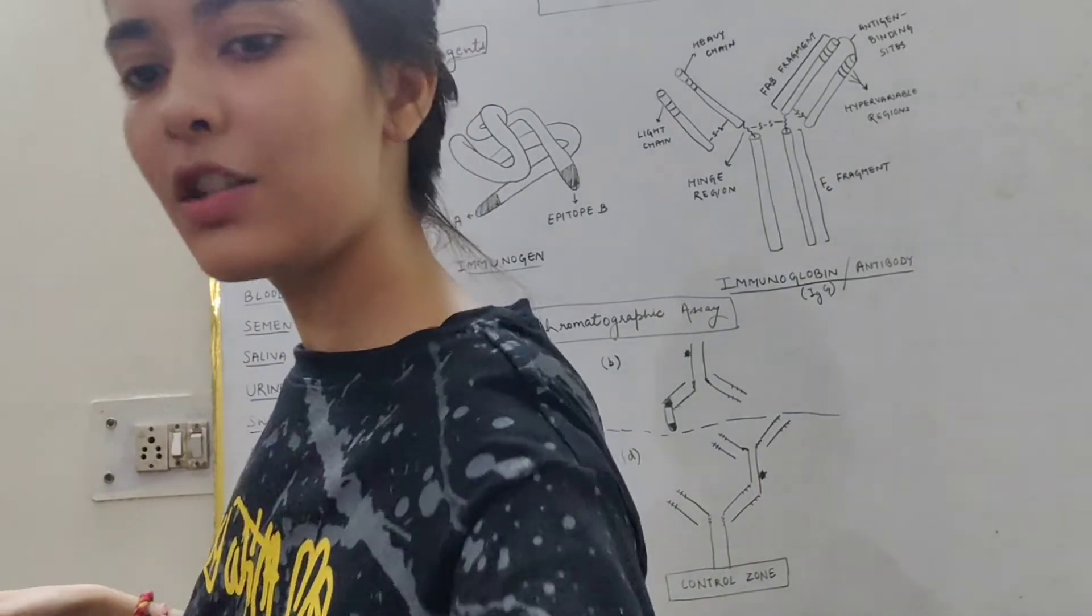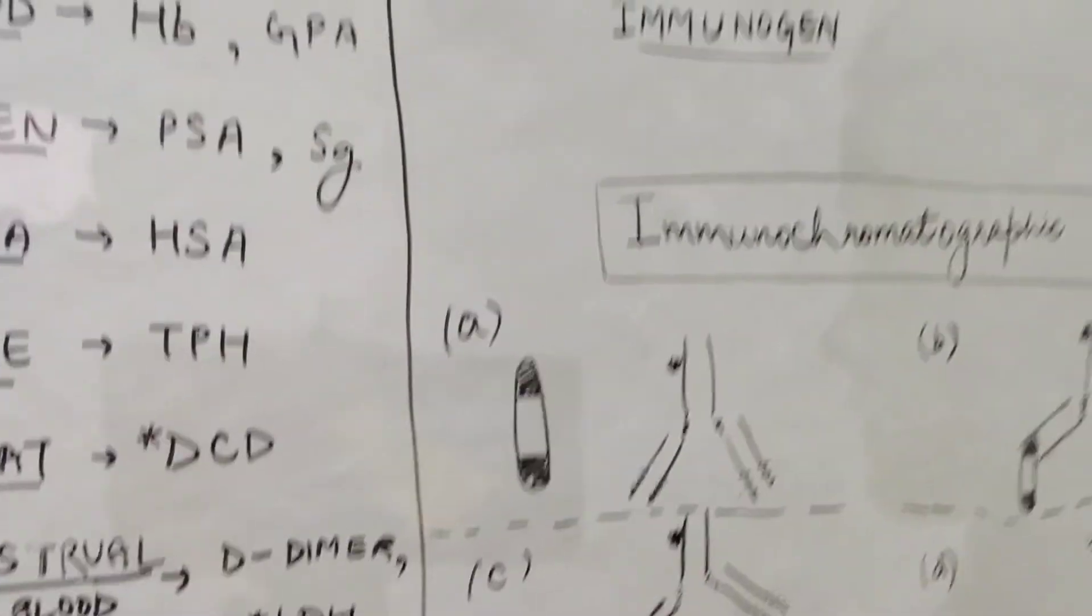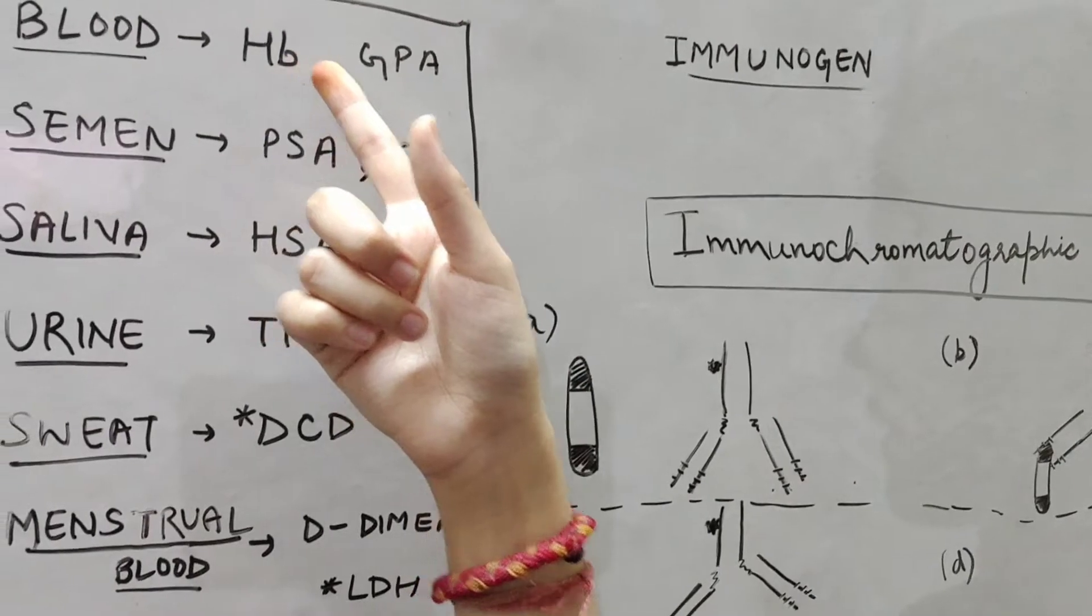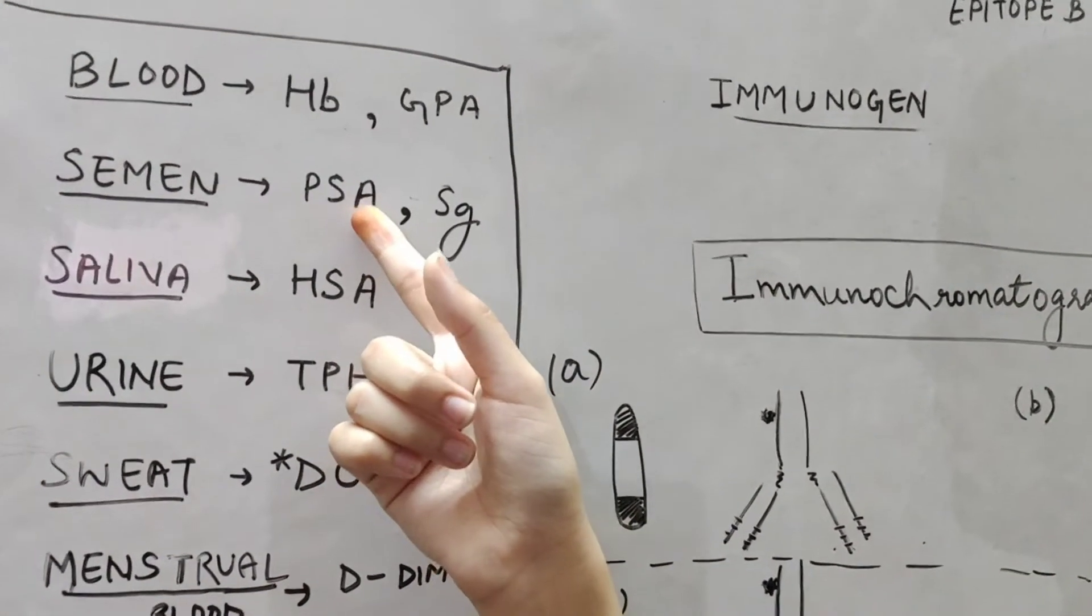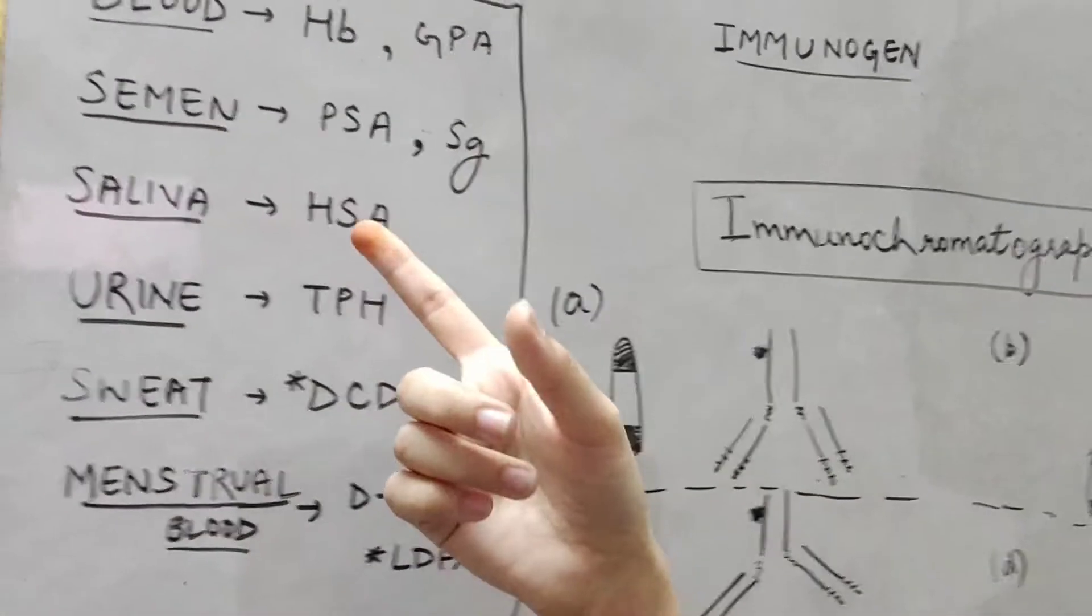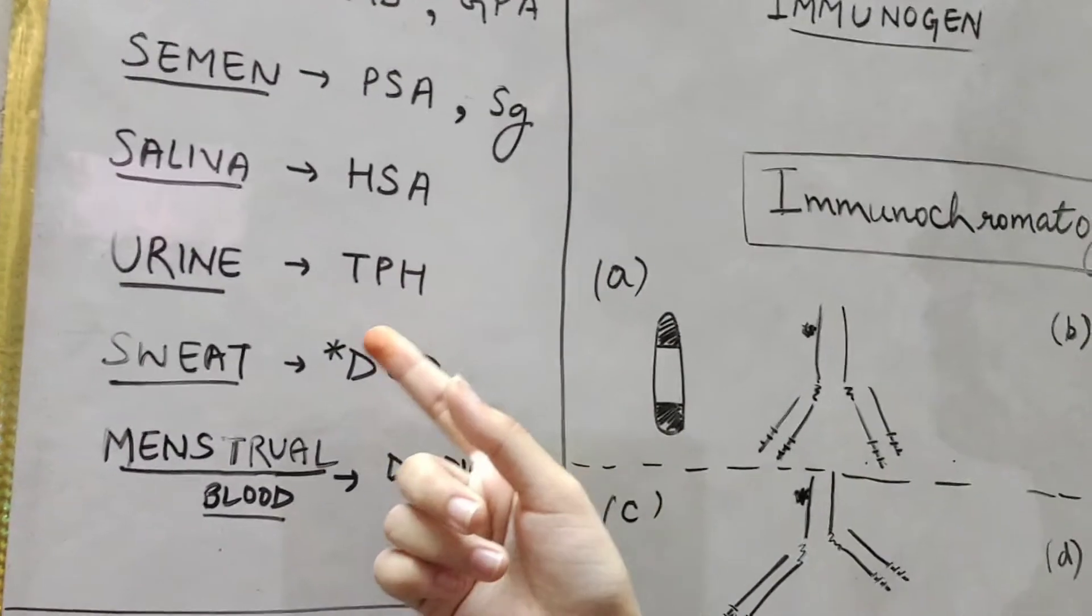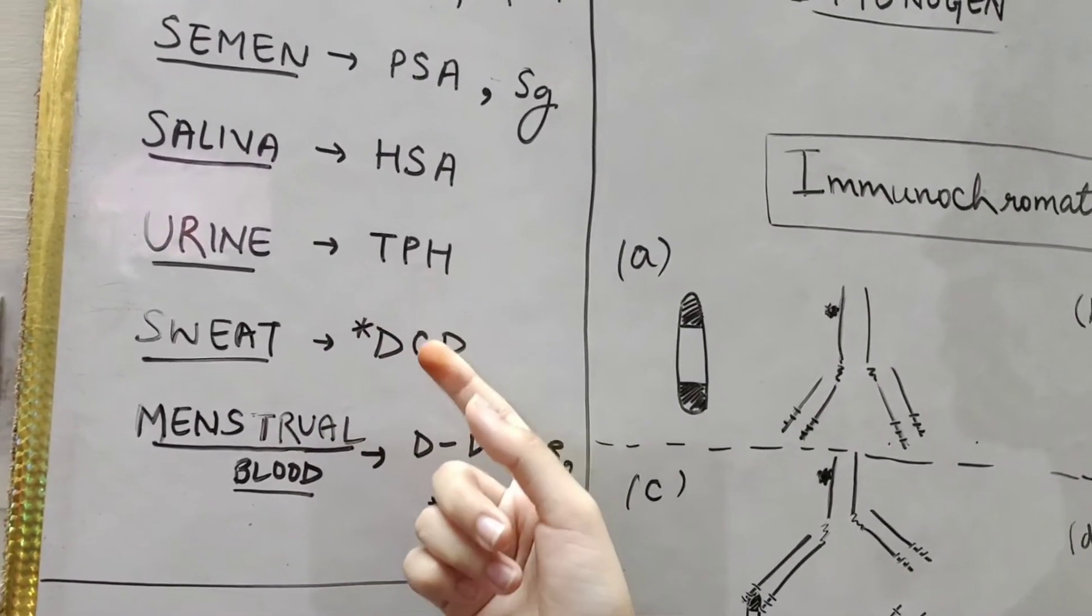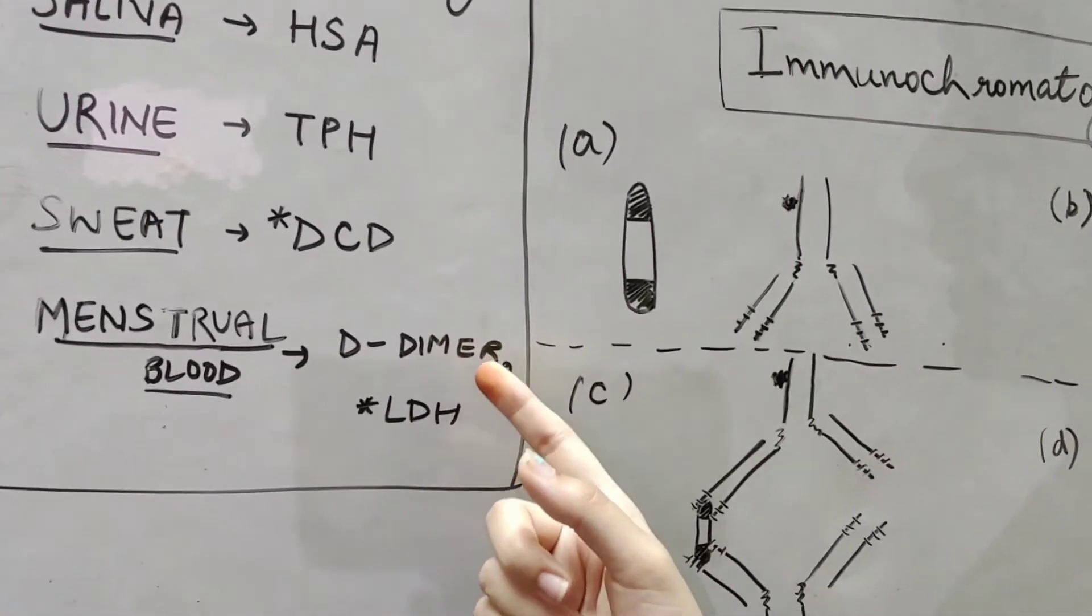First of all, let me show you the antigens present in different types of body fluids which we are going to use in immunochromatographic assay. Blood have HB and GPA, glycophorin protein. Semen has PSA, prostate specific antigen and SG, semenogelin. Saliva has HSA, saliva alpha amylase. Urine has TPH. Sweat has DDC, dermcidin. And menstrual blood has D-dimer and LDH.